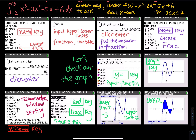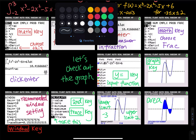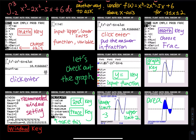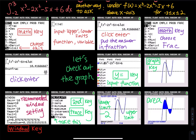I wrote negative 3 — that is supposed to be negative 2. Let me correct that. The lower limit is negative 2 and the upper limit is 3, following what was written at the very beginning.